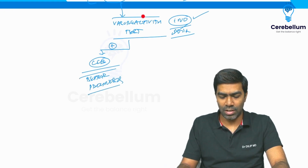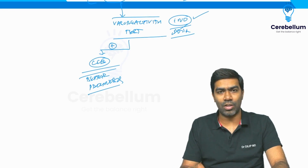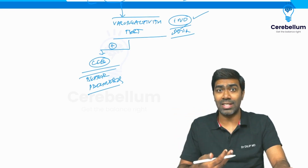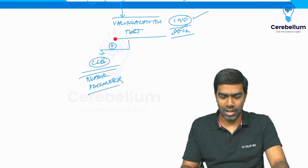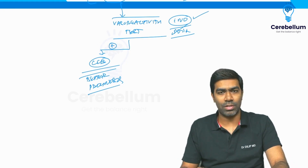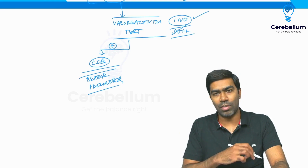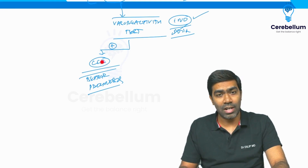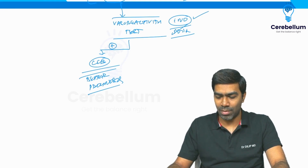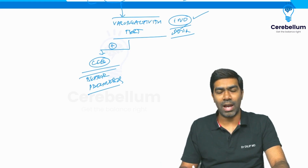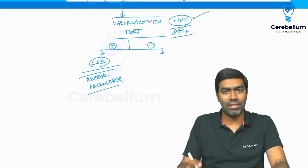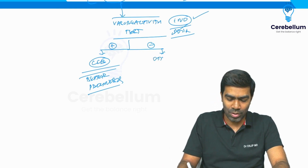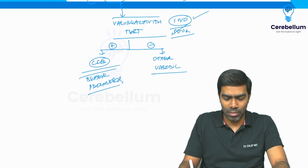After giving a vasodilator like inhaled nitric oxide, if the pulmonary vascular resistance decreases to less than 3 Wood units, the vasoreactivity is positive and the patient is responding to vasodilators. You can then start calcium channel blockers like nifedipine or amlodipine. If vasoreactivity testing is negative, you must opt for other vasodilators — calcium channel blockers cannot be used.